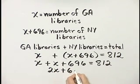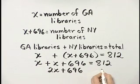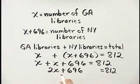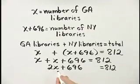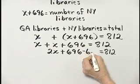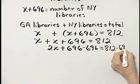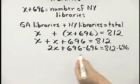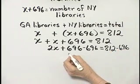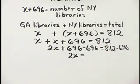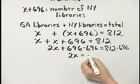I'll put plus 696 and leave a space because I'm going to isolate this variable term by subtracting 696 from both sides. On the left side, simply 2X. And on the right side, 812 minus 696, that is 116.